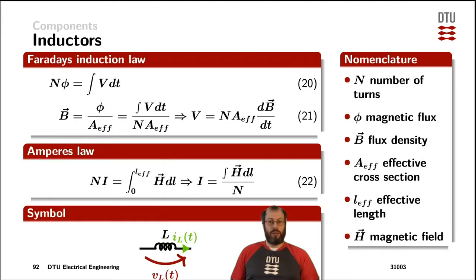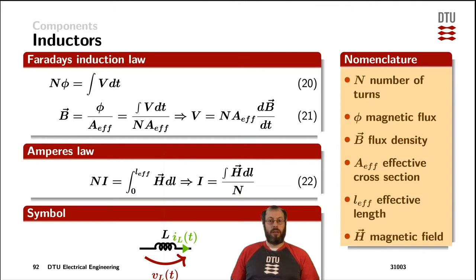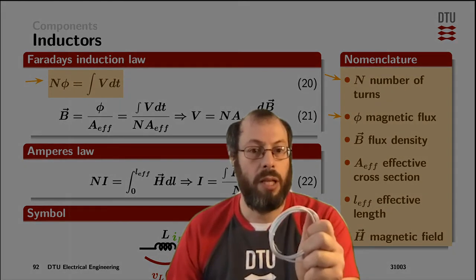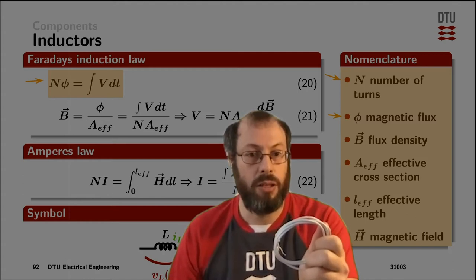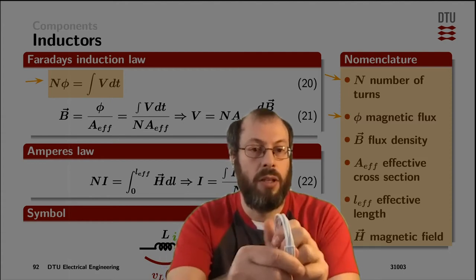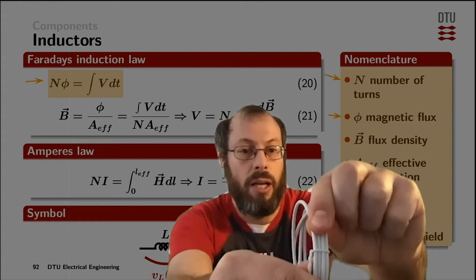Now let's investigate the physics behind inductors. First of all, I would like to define the nomenclature. The variables defined on the right-hand side here are used in Faraday's induction law and in Ampere's law on the left-hand side. The number of turns shows up in both of them. In Faraday's induction law, the number of turns times the magnetic flux is equal to the integral of the voltage over time. Taking a piece of wire — a piece of copper or any conductive material, typically copper — and winding it up a couple of times, we get the number of windings. Here I have an example of four windings on that piece of cable.